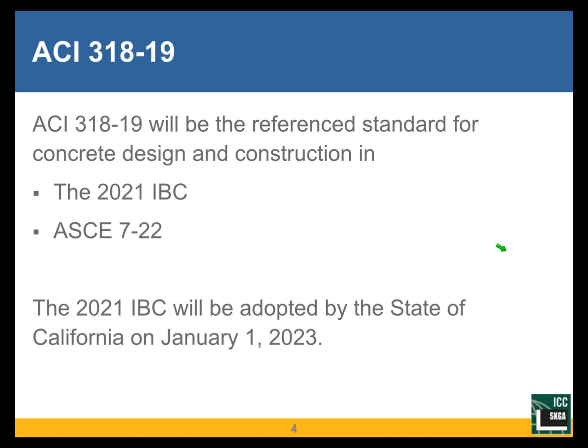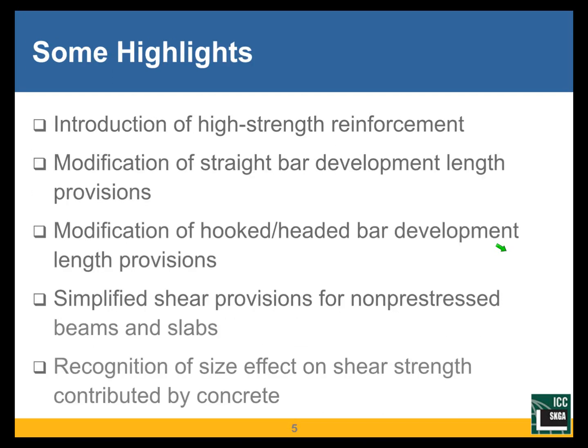To start, here is a glimpse at some of the biggest changes made in 318-19. High-strength reinforcement — yield strengths of 80 KSI and 100 KSI — have been introduced for applications including high-seismic applications. Details on every item will be covered in the rest of the seminar.